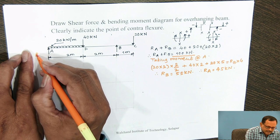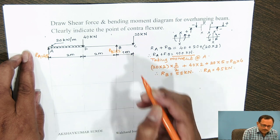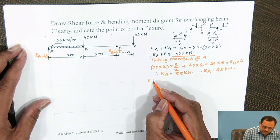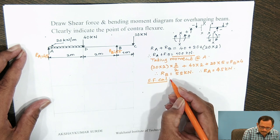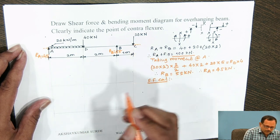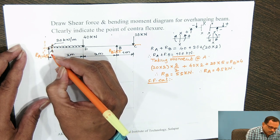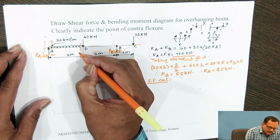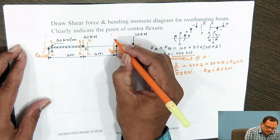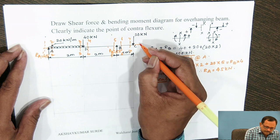Reaction at A, R_A = 45 kN, and R_B = 55 kN. Now we will calculate the shear forces. We extend the beam portions beyond A and beyond C and consider sections: 1-1 just to the left of A, 2-2 just to the right of A, and similarly sections 3-3, 4-4, 5-5, 6-6, 7-7, and 8-8.